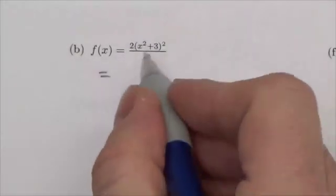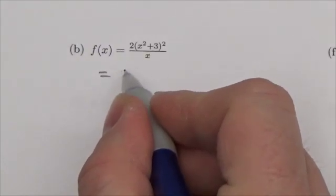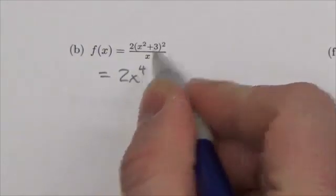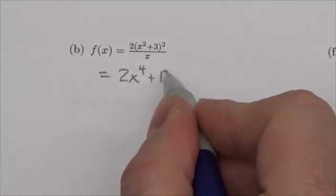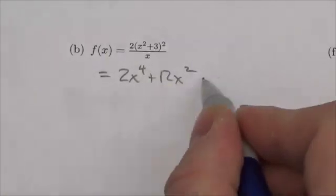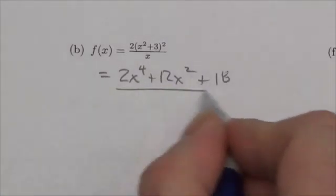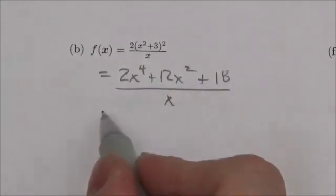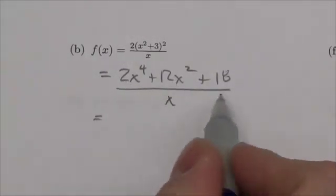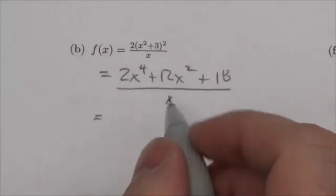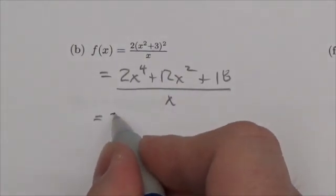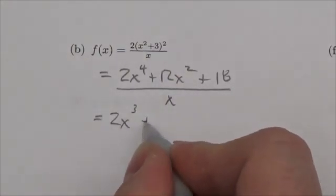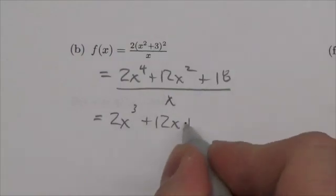So what I'm going to do here first of all, I'm going to expand the numerator, and that's going to get me, what is that? It's going to be 2x to the fourth. That'll be plus 12x squared plus 18 all over x. And now what I'll do is I'll distribute that monomial denominator to each of those three terms.